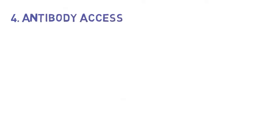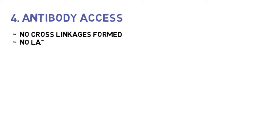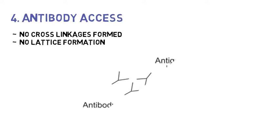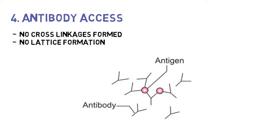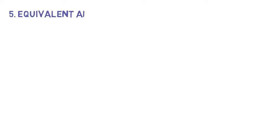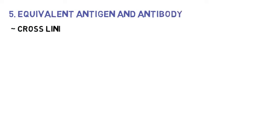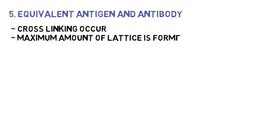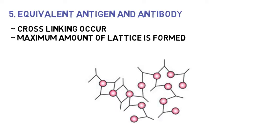In the case of antibody excess, antigens can bind only with a few antibodies, so no cross-linkages are formed and many antibodies remain free. Because antigens are insufficient, no lattice formation takes place. In the case of equal concentration of antigens and antibodies, cross-linking occurs as each antigenic epitope is shared between two antibodies, and the maximum amount of lattice is formed, resulting in insoluble visible precipitates.